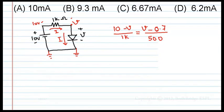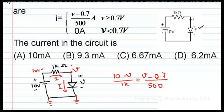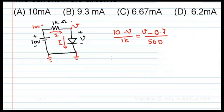Then I am finding out what is V. If V comes out to be greater than 0.7, what I am doing is correct. If V comes out to be less than 0.7, then 0 amperes flows. Let us find what is V.